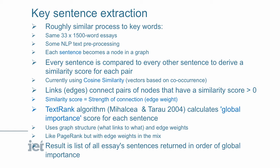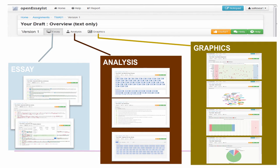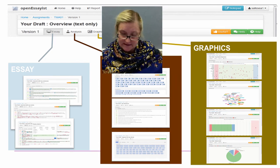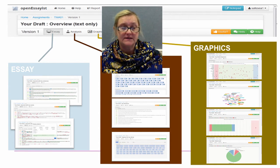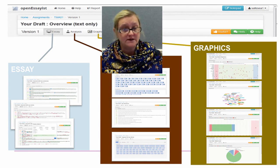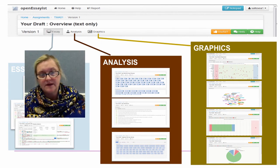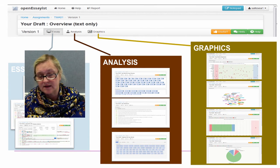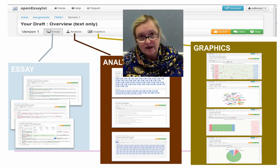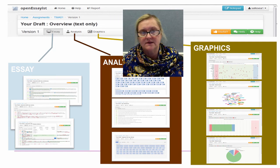The key sentence extraction, which gives us our summary, is roughly a similar process to the key words. You need at least 1,500 words in the essays for it to be more accurate, and there's a text ranking algorithm. The feedback to the students is really in two forms: you've got the essay view, where the analysis will show you where things have been picked up in your essay — the part on the left-hand side — so you can go back to the original essay and find where the analysis has taken place. Then there's the analysis part where we look at key words and key sentences, and a number of graphics to help the student understand the analysis.